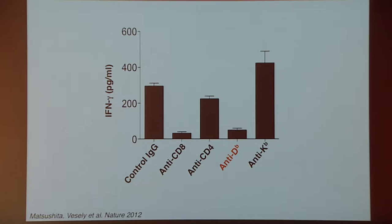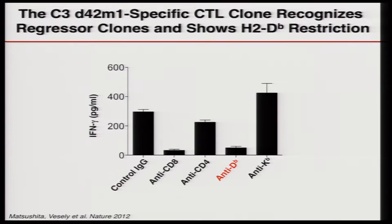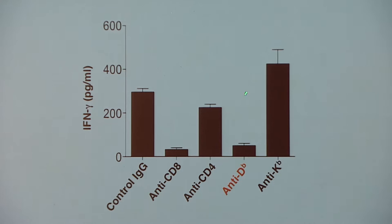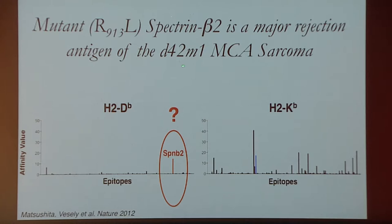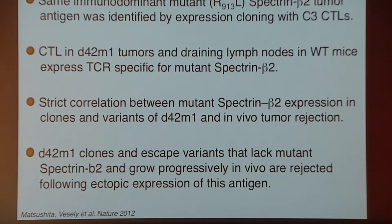To determine between these two, you go back to your T-cell clone and look to see which form of the class I molecules presents the relevant epitope. You do that by inhibiting with anti-H2D of B — you can inhibit stimulation of that clone with anti-D of B, but not anti-K of B. And so that work led to a hypothesis — one that could have been done in a matter of a couple of weeks had exome sequencing been available — that the mutant form of spectrin beta 2 representing an R913 mutation is a major rejection antigen of the D42M1 MCA sarcoma.